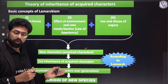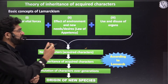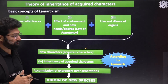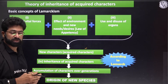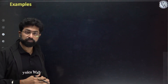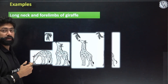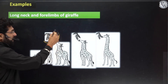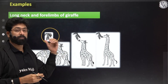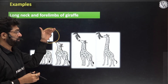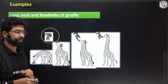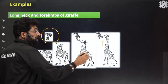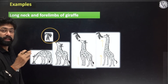Lamarck explained that the neck of the giraffe elongated because they had to feed on plants at greater heights, and four limbs also elongated. However, Lamarck was not 100% correct. A scientist named Weismann criticized Lamarck's theory with an experiment: he cut the tails of mice for 22 generations and found that offspring still had tails. Even though Indian women have been piercing noses and ears for generations, no child is born with a ready-made pierced nose — proving acquired characters are not inherited.